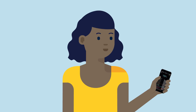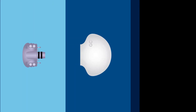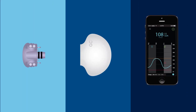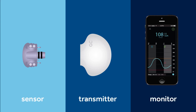What if there was another way to get information about your glucose levels? CGM gives you a way to see what your glucose levels are throughout the day and night. The CGM system is made up of three parts: the sensor, a transmitter, and a monitor.